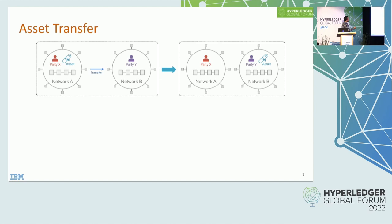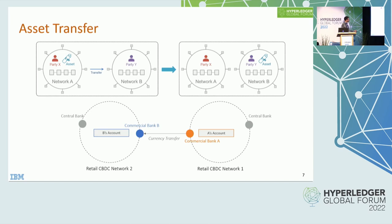Finally, asset transfer is where one party in one network transfers an asset it owns to a different party on a different network. The asset gets expunged from one network and recreated in another in an equivalent form that both networks have agreed upon. As an example, imagine two central bank digital currency networks where one party wishes to transfer CBDC from its account in one network to another party's CBDC account on a different network.